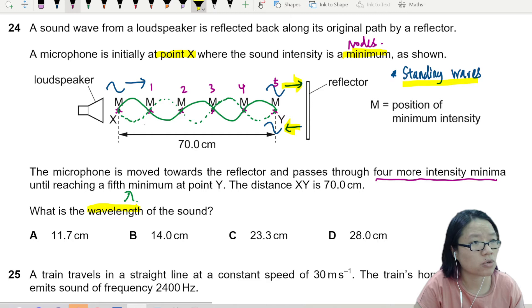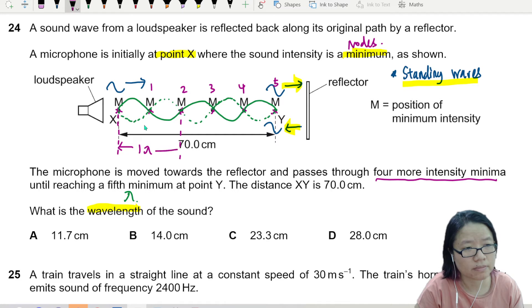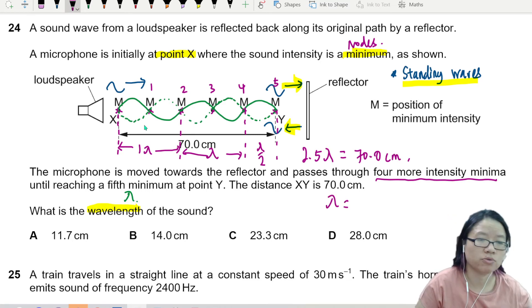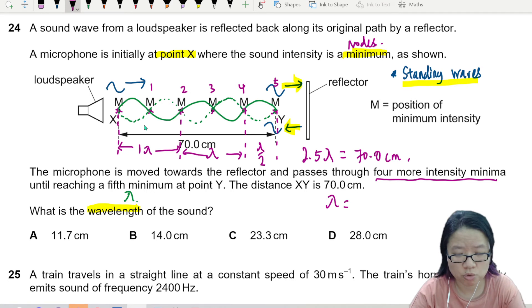So here to here, this one is one lambda. Here is two lambda. And here is half a lambda. So the whole thing is 2.5 lambda. And 2.5 lambda is equal to 70.0 cm. So from here, you can find lambda by using 70 divided by 2.5.